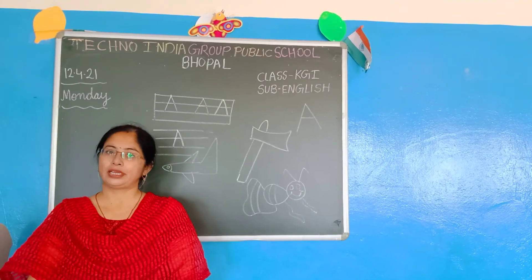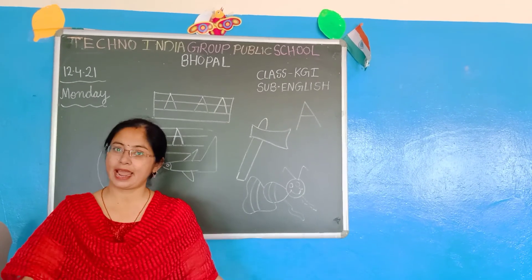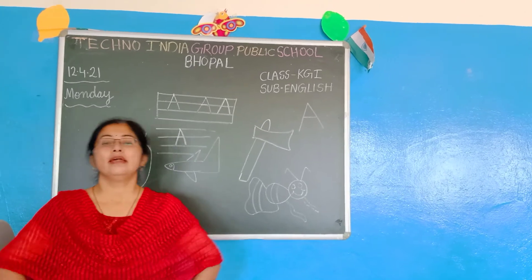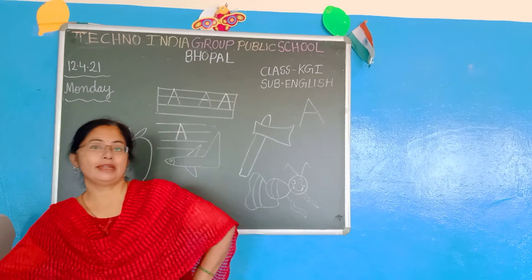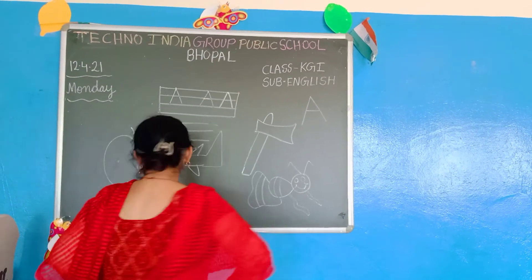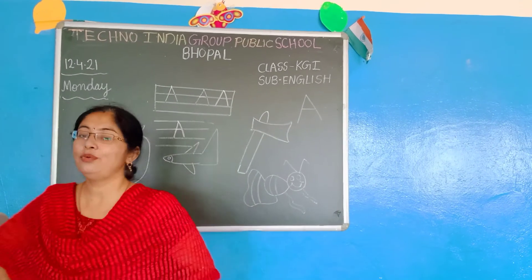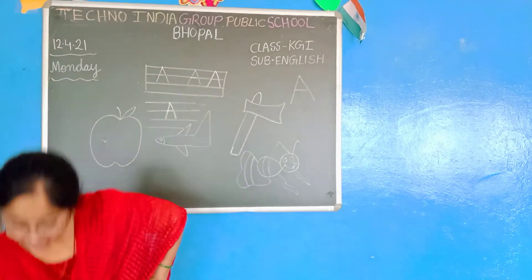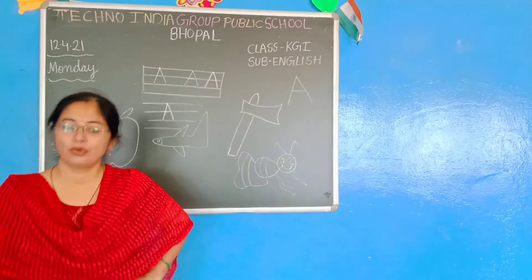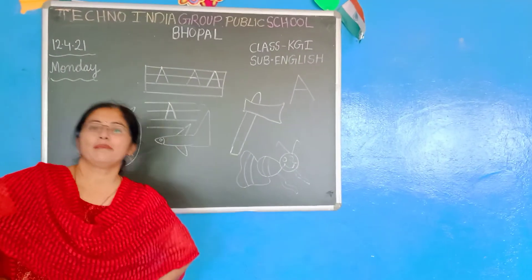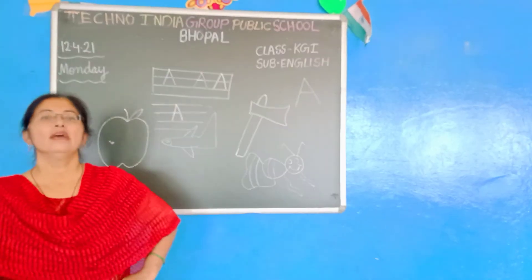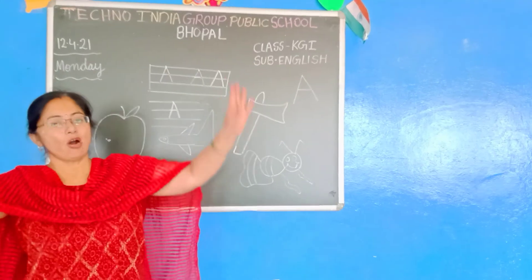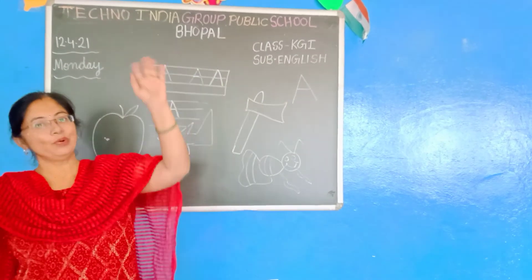Okay children, now it is circle time. Today we will do the poem Teddy Bear. Teddy bear, teddy bear, turn around. Teddy bear, teddy bear, touch the ground. Teddy bear, teddy bear, polish your shoes. Teddy bear, teddy bear, off to school.